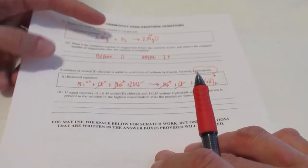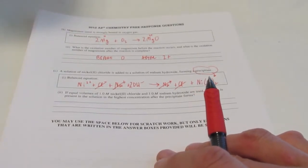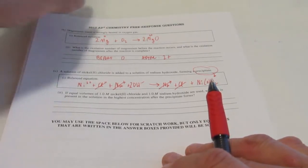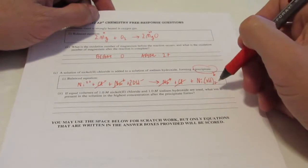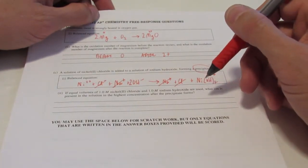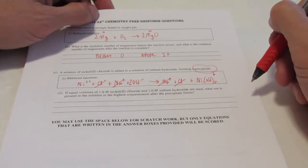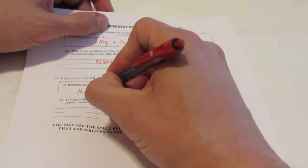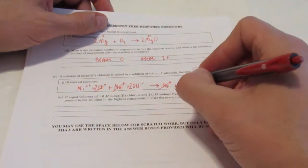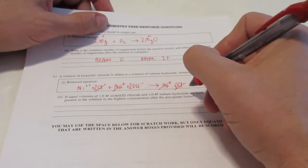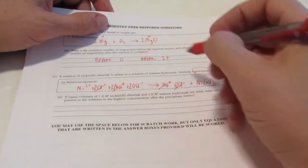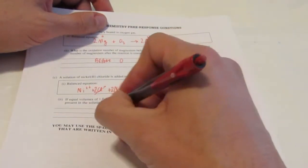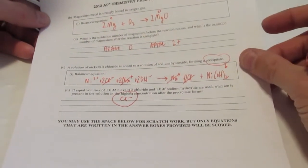There's my four points. So it says if equal volumes of one molar nickel-2 chloride and one molar sodium hydroxide are used, what ion is present in the solution in the highest concentration after the precipitate forms? Well, let's see. Let's keep in mind nickel-2 chloride. In reality, this would have Ni2+ and two Cl-, and I would have two Cl- over here, and two of sodiums. But we have twice as many chlorides as I have sodiums, so chloride would be the ion present in the highest amount. And there we go.